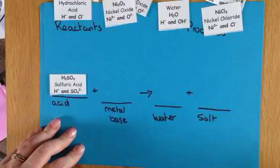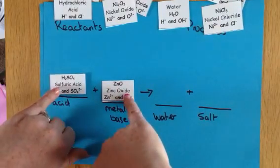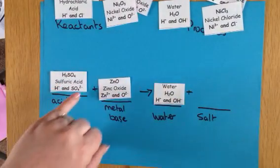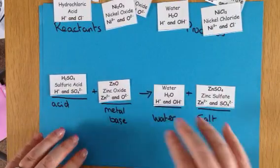And if we look at sulfuric acid and zinc oxide, again, if we take out the things that make the water and we just pop the water there, we're going to be left with the sulfate bit here and the zinc bit here, so that's going to be zinc sulfate.